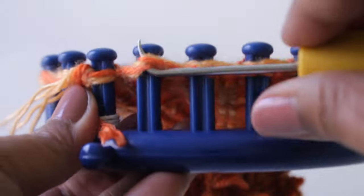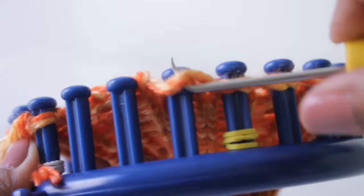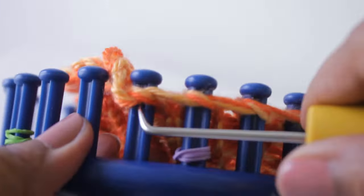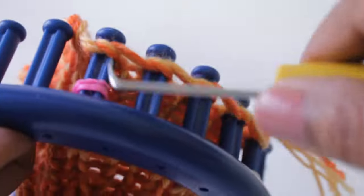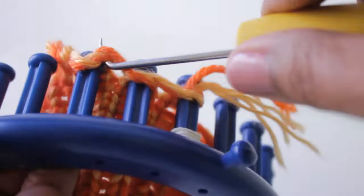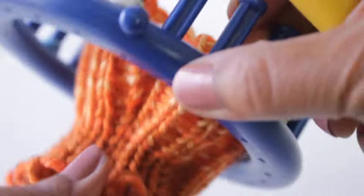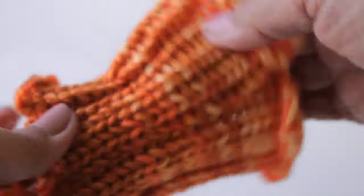When you finish feeding the working yarn through all the loops, then you're ready to take the loops off the pegs. After you remove all the loops from the pegs, then you're gonna stretch your stitches. And this is important for your fabric to look correct.